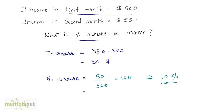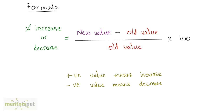That was the long way. The formula is: whenever you need to calculate percentage increase or decrease, take the difference of the new value and the old value — new value minus old value — divided by the old value, times 100. If this value is positive, there is an increase; if negative, there is a decrease.